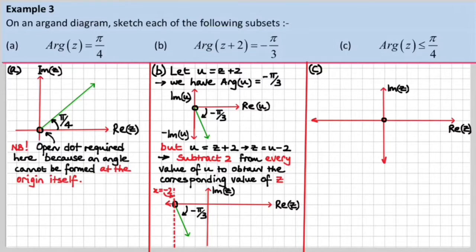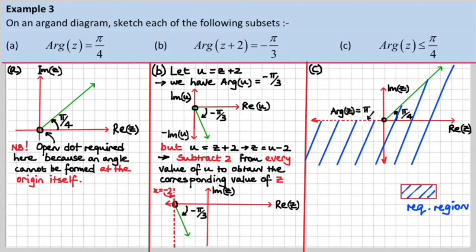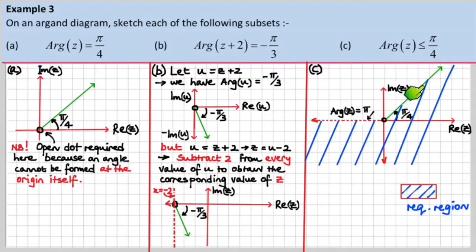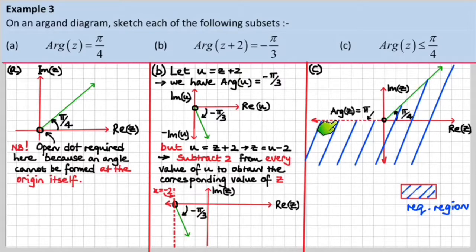Part C. Now this is a region. There's our Argand diagram. This green ray here represents the argument of z equal to π/4, and of course we need everything equal to or less than π/4. If we were to rotate that green ray in our minds, we would realise that we were getting angles less than π/4 all around — except we don't include the x-axis to the left of the origin, because that represents where the argument of z equals plus π. So we just put a little dotted line there to indicate that that's not included in our region. That's the answer.